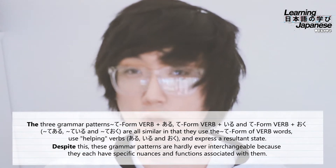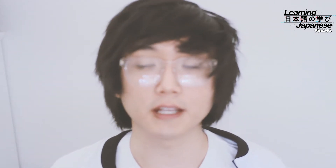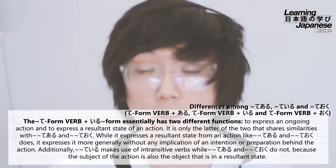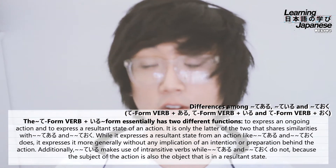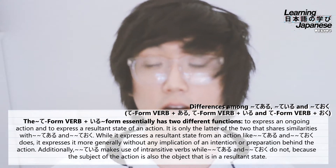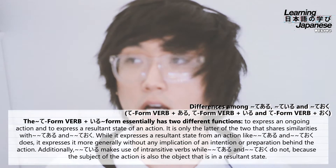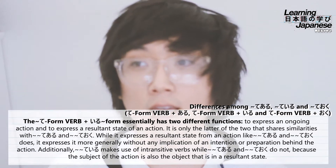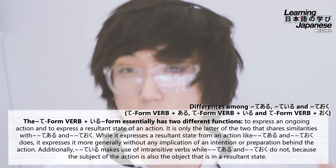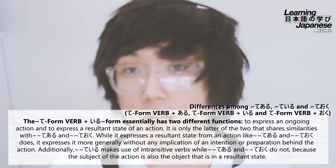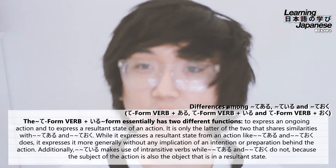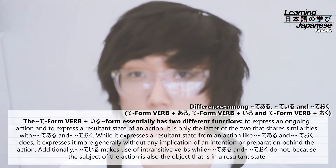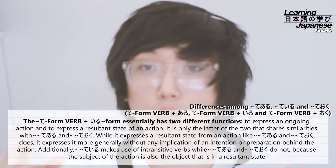We'll start with te form plus iru — probably the most common of the three. We've covered all three before, but today we're focusing on their differences. This pattern has essentially two functions. The first is ongoing action — saying you are currently doing something, like 'I am running right now.' That function isn't the focus here. It's the second function that's relevant: the expression of a resultant state.